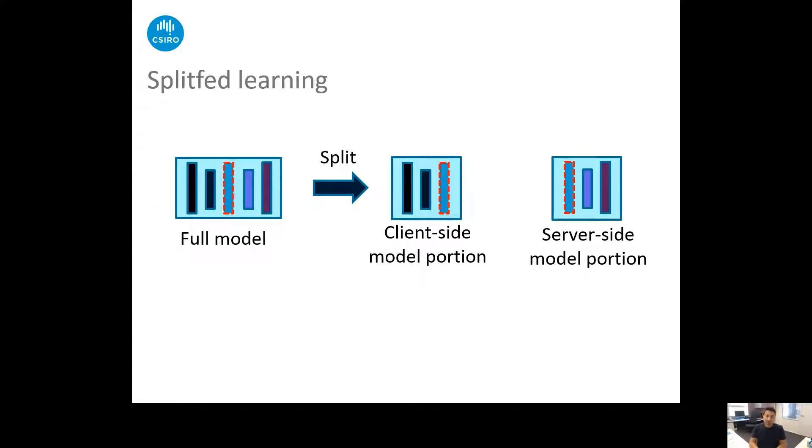So as we know in a split kind of learning we have a full model. Then the first step is to split the model into multiple portions. In a very simple setup, we split it into two portions. One is client side model portion and the second one is server side model portion.